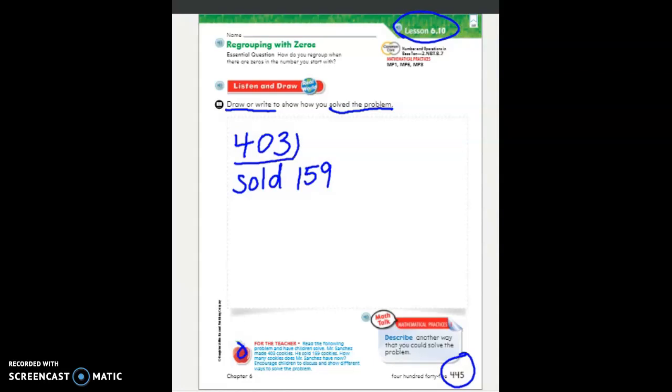He started with 403. He sold 159. If he does not have them anymore, we know that that is subtraction. So I'm going to write a subtraction problem. He starts with 403. We're taking away 159, the amount that he sold. And then we're going to do our subtraction problem. We're going to look at our ones place. Always start at the ones place.